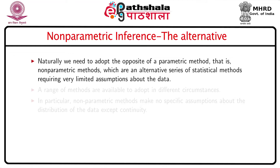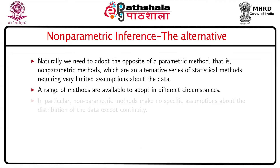If we have data from a log-normal, exponential, or gamma distribution and we don't know the parent distribution, we cannot use appropriate parametric methods. In most cases the underlying distribution is not known and we need some inferential procedure. Nonparametric inference is the only alternative in such cases. Since there is no parametric assumption, we need to adopt nonparametric methods, which are an alternative series of statistical methods requiring very limited assumptions — specifically, that the observations are independent and from a continuous population.